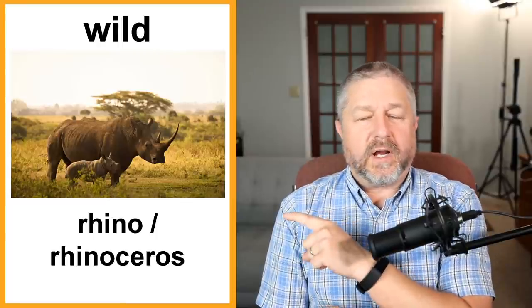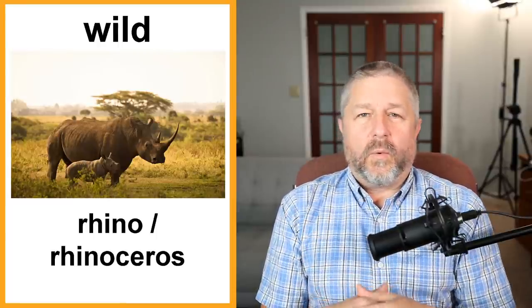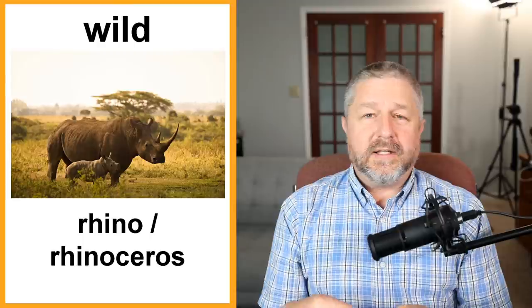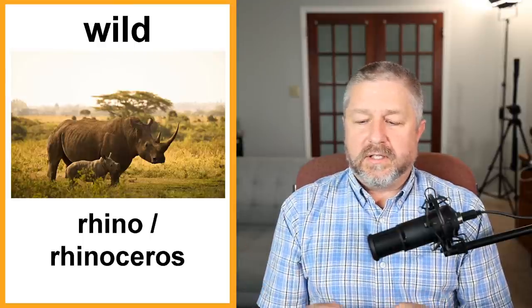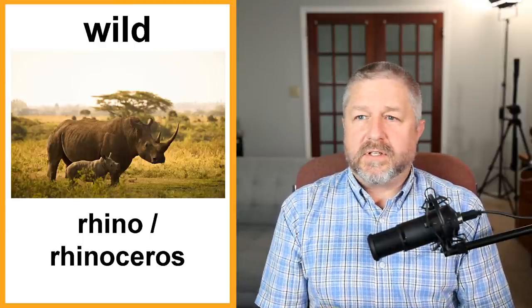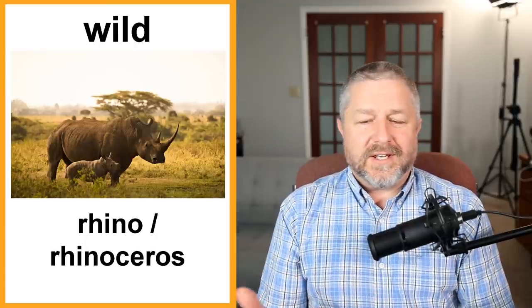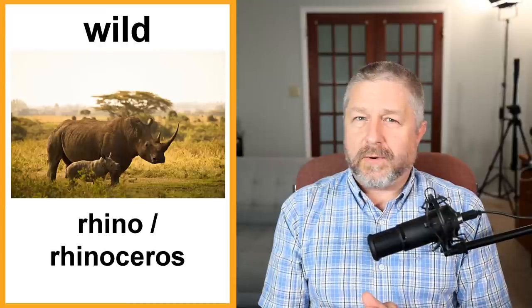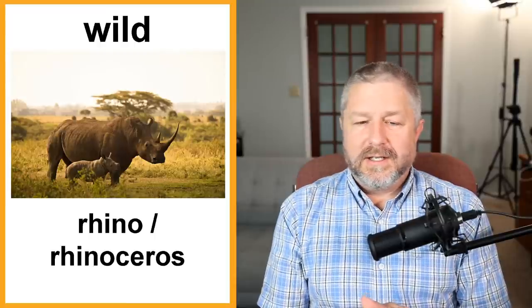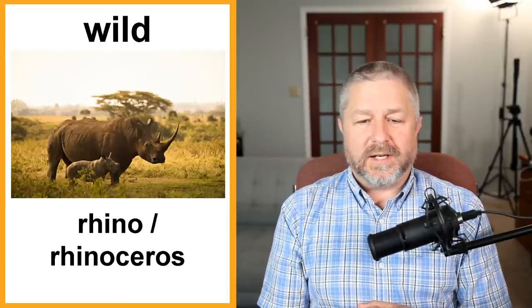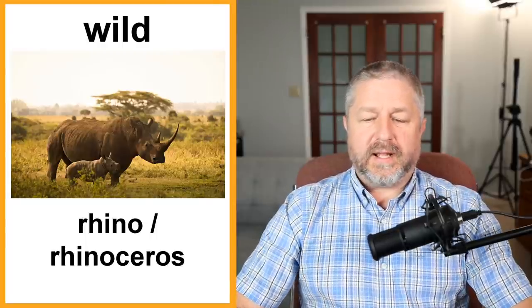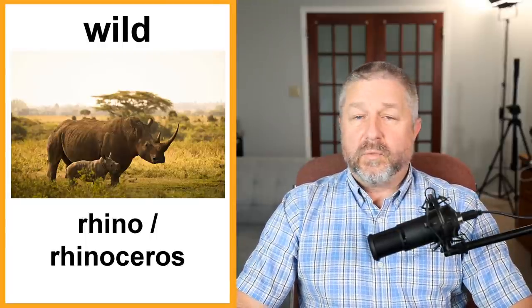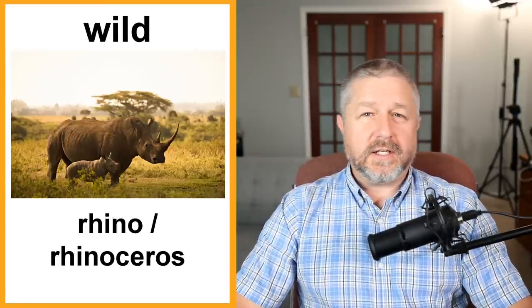Here we have the rhino or rhinoceros. A wild animal is an animal that lives in the wild — in the wilderness, in the forest, outside of the city. Sometimes wild animals even live in the city: Canadian geese and raccoons live in cities but are also considered wild animals. A wild animal is any animal that finds its own food, reproduces in the wilderness, and does not need humans to survive.